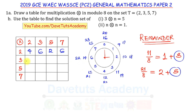Continuing the table: 3 × 3 = 9, remainder 1, so enter 1. Then 3 × 5 = 15, remainder 7, so enter 7. Then 3 × 7 = 21, remainder 5, so enter 5. For 5 × 5 = 25: 25 ÷ 8 = 3 remainder 1 (since 8 × 3 = 24), so we enter 1.